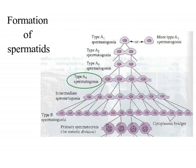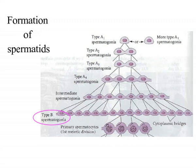Type A4 spermatogonia differentiate into the first committed stem cell called intermediate spermatogonia. Intermediate spermatogonia divide once to form type B spermatogonia, which act as precursors of spermatocytes and are the last cells in the cell line to undergo mitosis. Type B spermatogonia undergo mitosis to form primary spermatocytes.